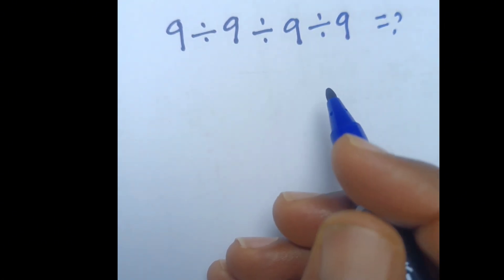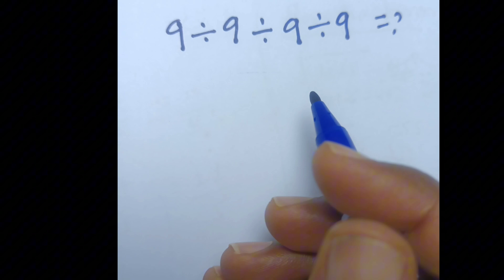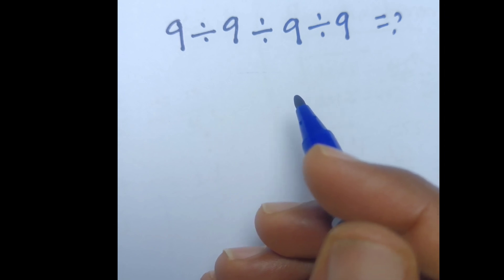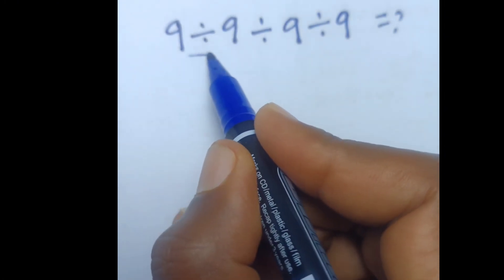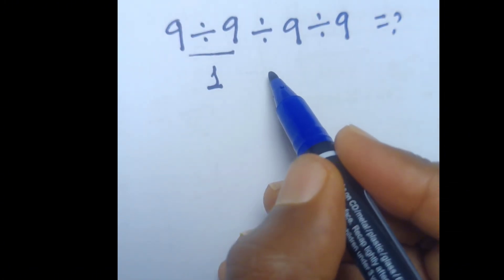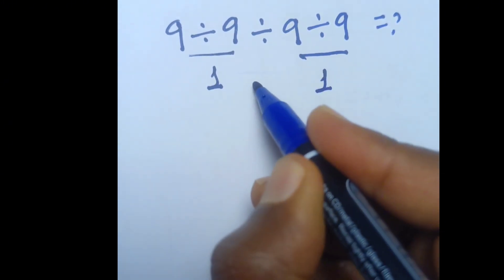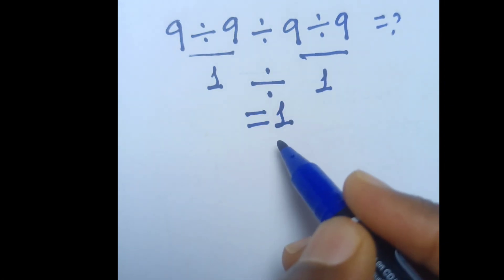At first glance this looks straightforward, but the answer completely depends on understanding one crucial math rule. Many people look at this problem and think: 9 divided by 9 is 1, 9 divided by 9 is 1, so 1 divided by 1 equals 1.